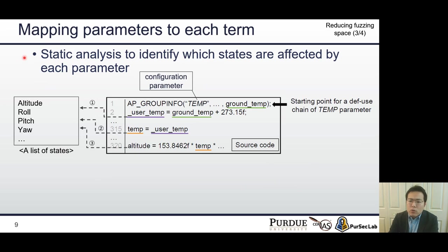The next step is that we need to know which inputs must be mutated to test the identified term. In order to map a configuration parameter to each term, we conduct static analysis. For example, this temp configuration parameter sets temperature for a barometer sensor. We first follow the data flow of parameter value, then we match the variable name to states in a list of states. In this example, the temp configuration parameter is used to calculate the RV's altitude. It means that if a policy includes an altitude term, we will mutate this temp configuration parameter to test the policy.